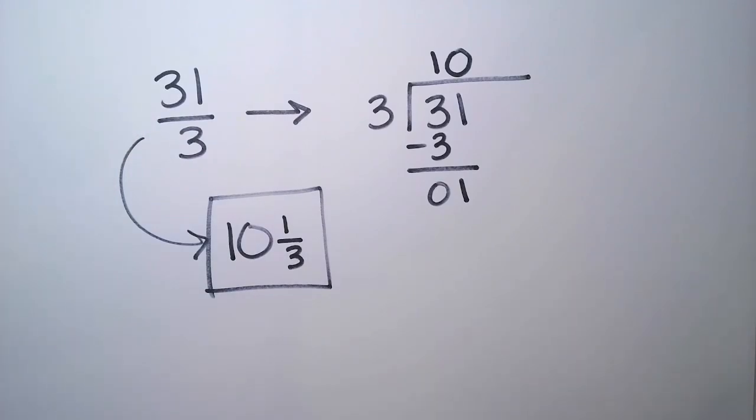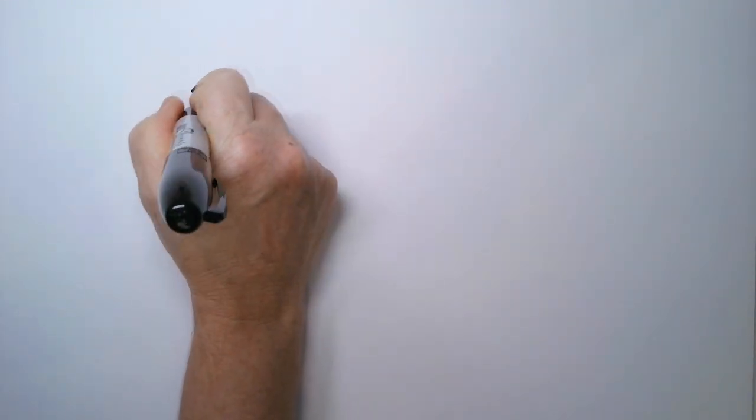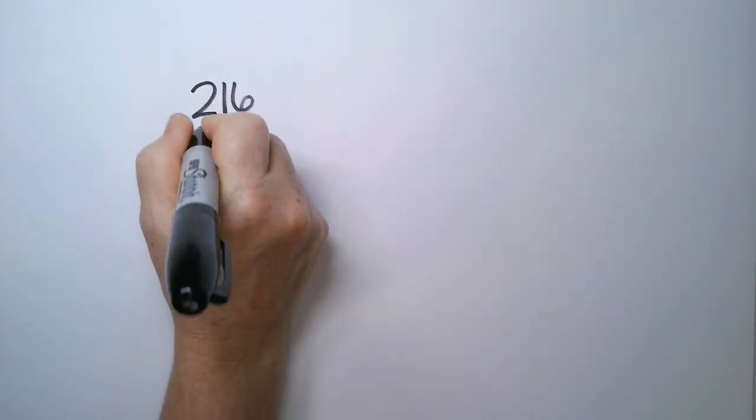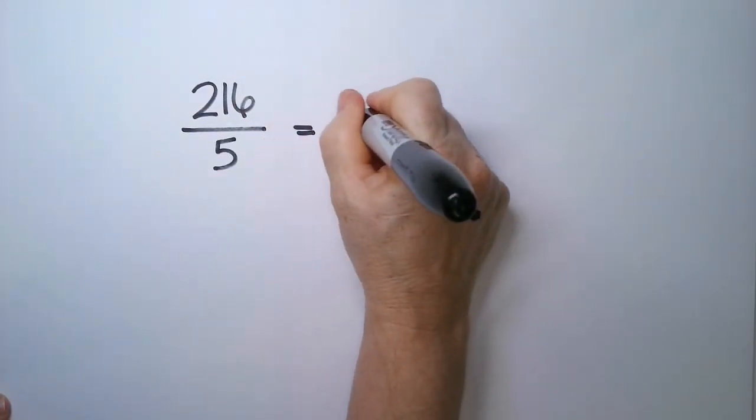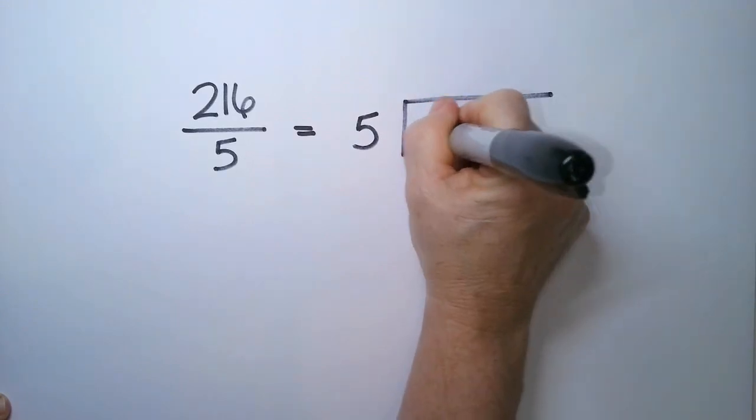Let's do a few more examples. Suppose I have a larger number, 216. We're going to divide that by 5. So the 5 goes outside. The 216 goes inside.